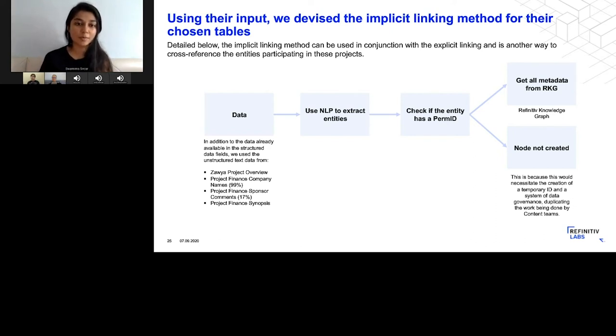What we did was we looked at all of these comments and unstructured text data that we had, and we did a named entity recognition on it to pull out all of the entities and then checked if that entity had a Perm ID. Now Perm ID is a unique identifier and using that, we were able to pull in all of Refinitiv's associated data on that particular entity into our knowledge graph. As long as something has a Perm ID, that means it has other metadata regarding its financing, its jurisdiction, its region, sector, and so on. We were able to populate our project-related data and our financing data with all of this entity data as well.